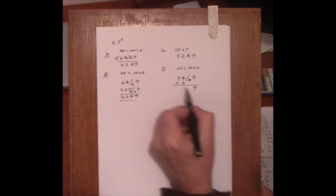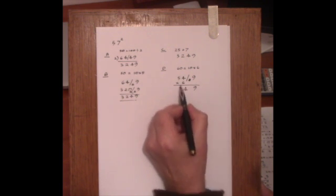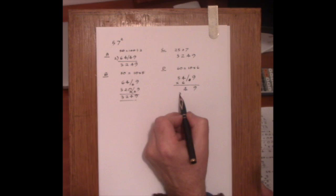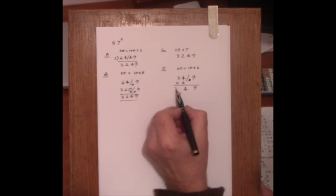And then we multiply the left-hand side by 6. So we get 9 here. 4 times 6 is 24. 5 times 6 is 30. And the carry 2 makes 32.